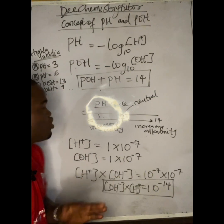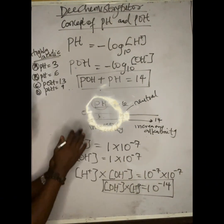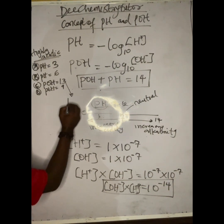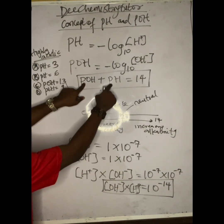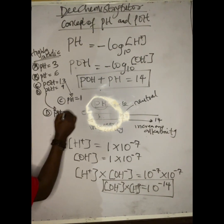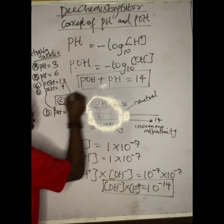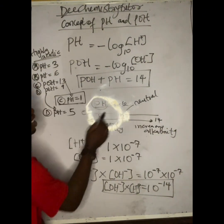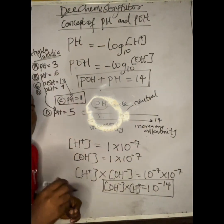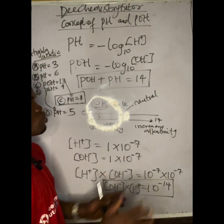I want to surprise you: the answer is not A. We use the pH scale, not the pOH scale. So for options C and D given in pOH, we must convert: pH = 14 − pOH. For option C, pH = 14 − 13 = 1. For option D, pH = 14 − 9 = 5. The most acidic is pH 1, so the answer is C.